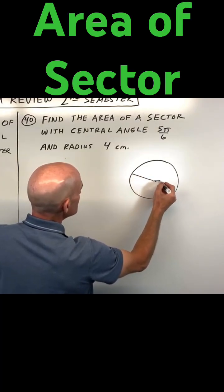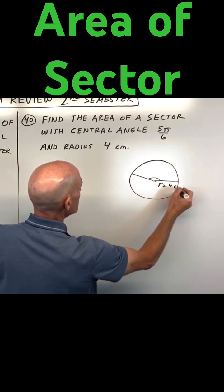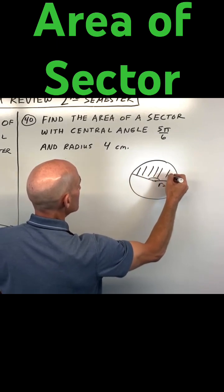5 pi over 6 is roughly like this, and here's a radius of 4 centimeters, and we're trying to find the area now.